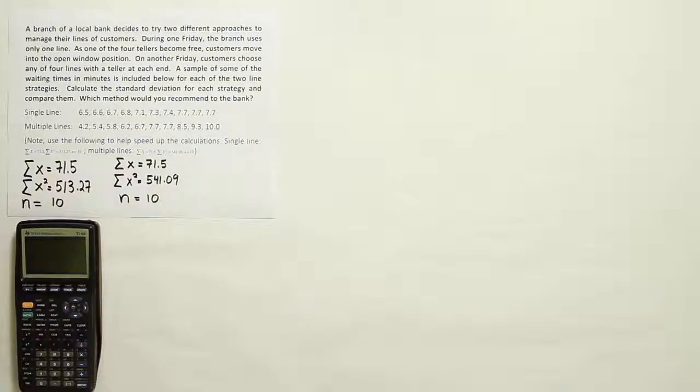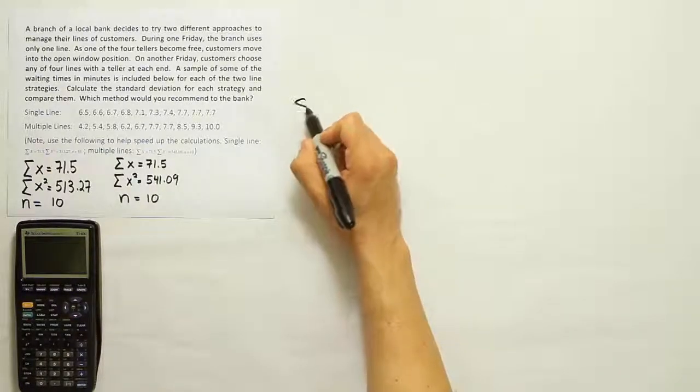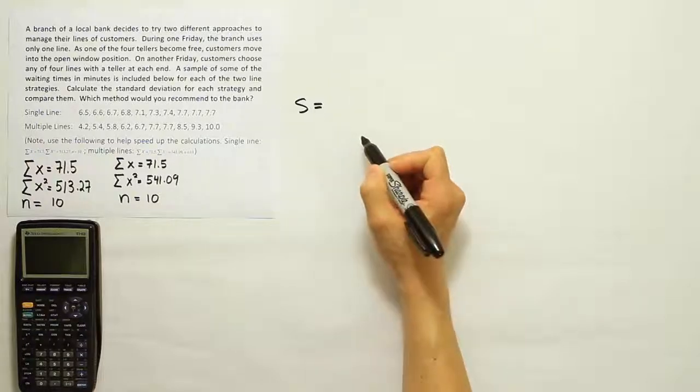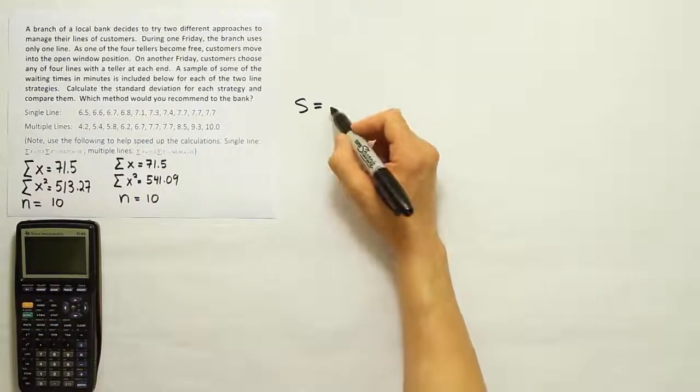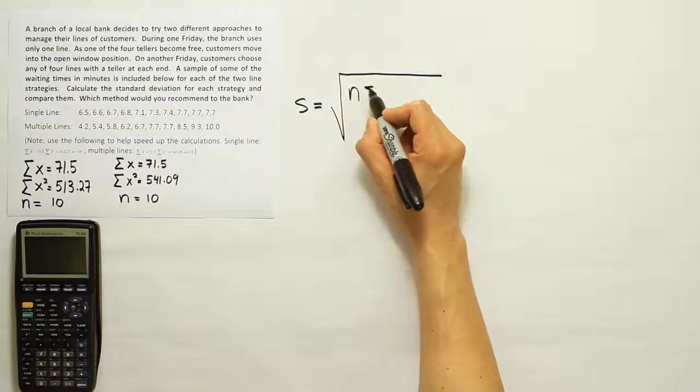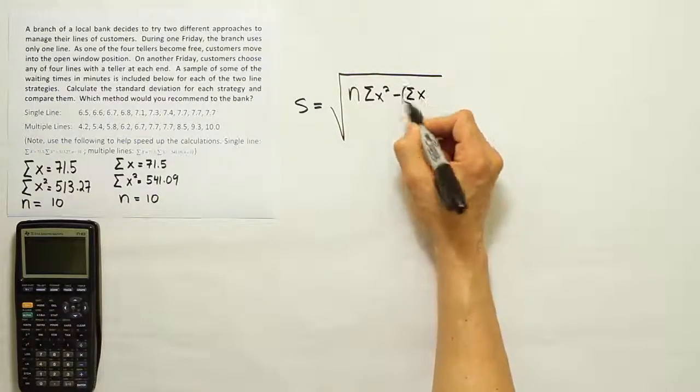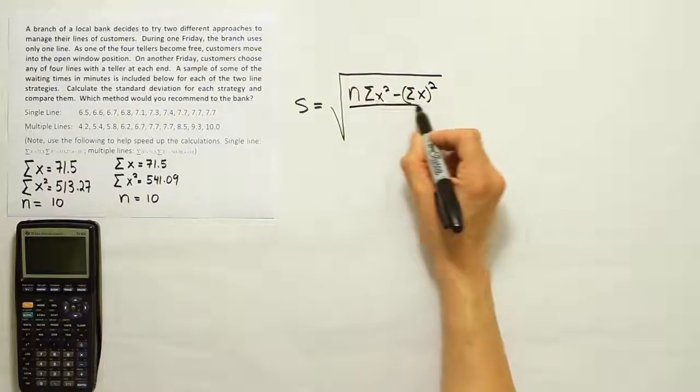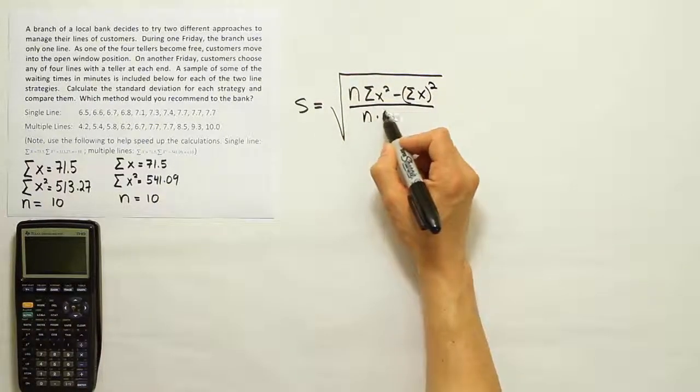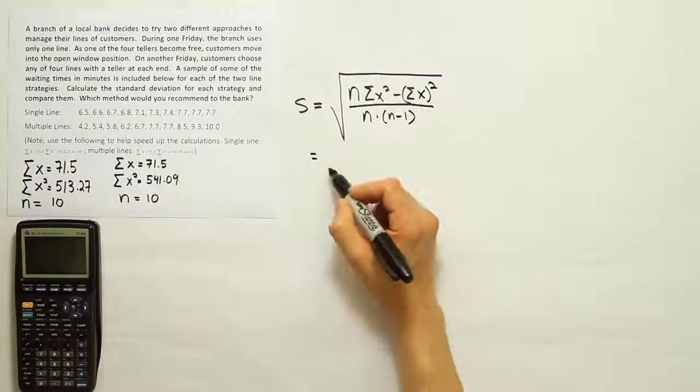All right, so let's go ahead and work out the first standard deviation. This would be for the single line scenario. So in the single line scenario, the formula for standard deviation, we'll call it s for sample standard deviation. It's going to be the square root of n times the summation of x squared minus the summation of x quantity squared divided by n times n minus 1.